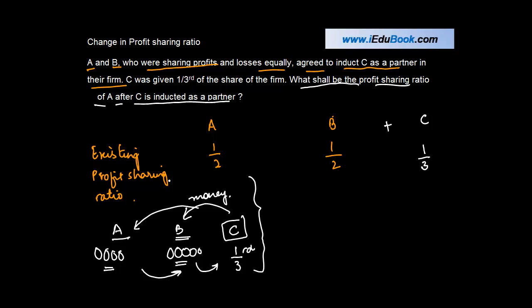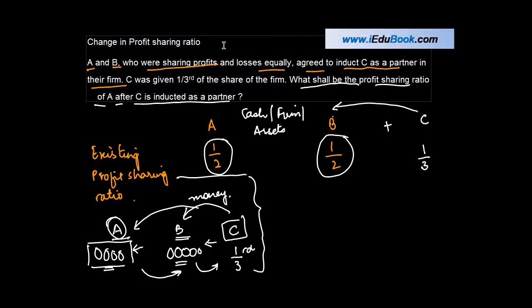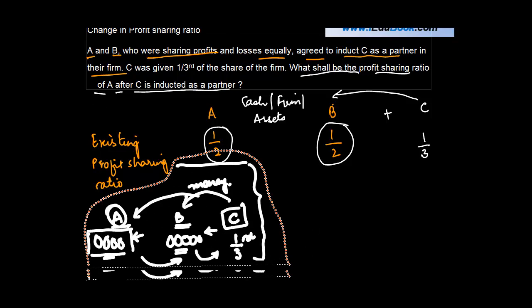Similar is the thing which happens in case of partnership also. So this half share is actually nothing but in the nature of these balls which are owned by A. When a new partner comes in, normally he gives the cash to these partners or introduces cash in the firm, or maybe he brings some assets. Whenever you give the balls to C, what will happen is that the number of balls available with A is going to go down, similarly the number of balls with B is going to go down. On these very lines, what happened is that whenever a new partner comes in, the share of profits of the old partner goes down.